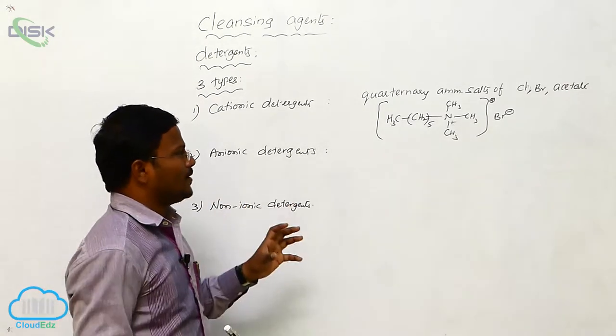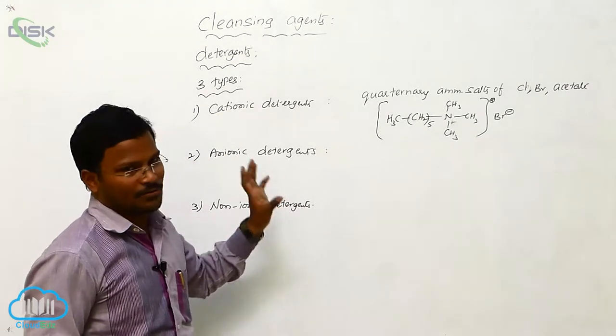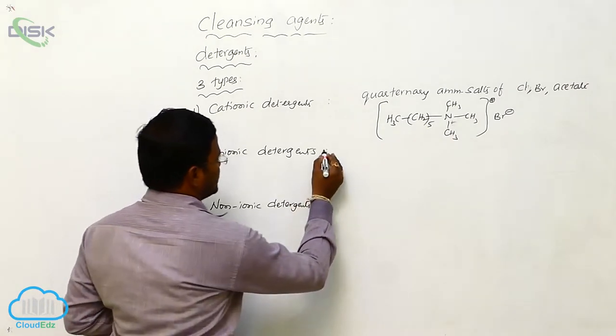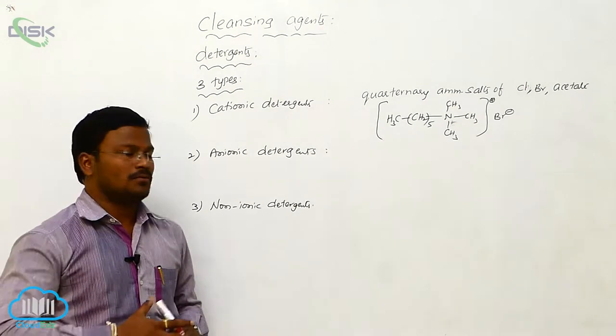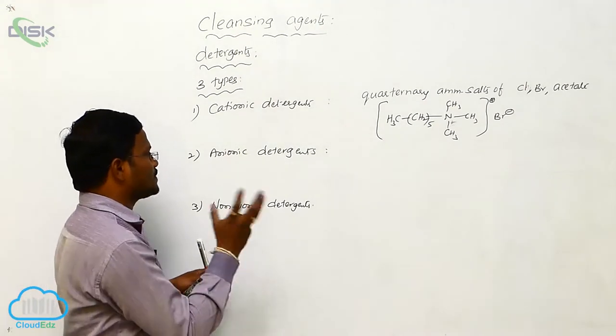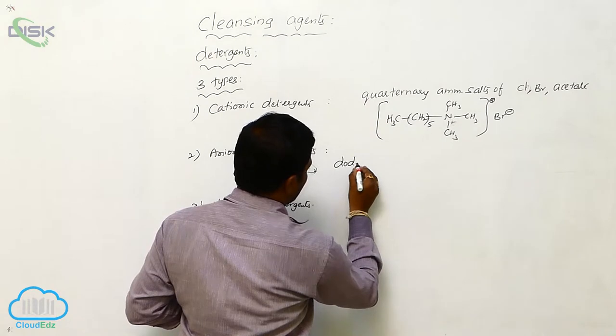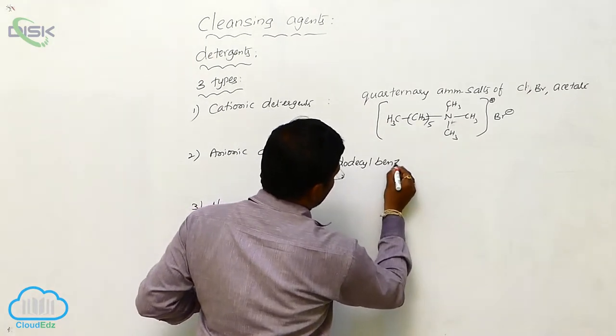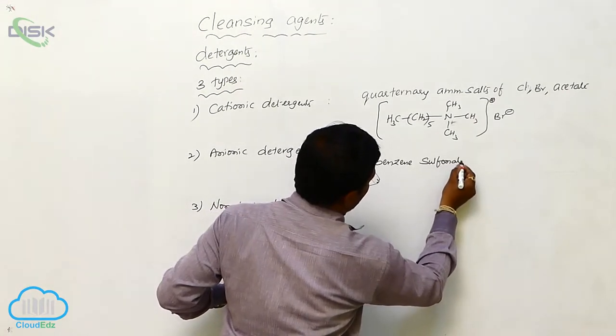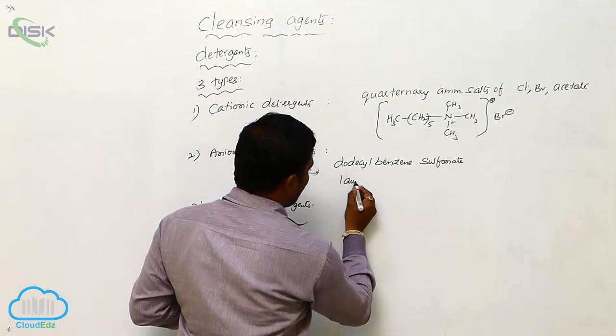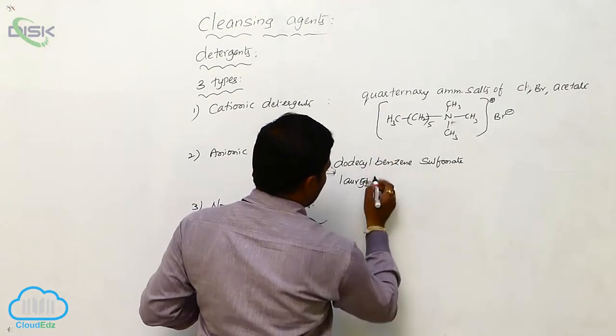And come to anionic detergent. Anionic detergents are also some names for the chemical substances which act as anionic detergents. These are dodecylbenzene sulfonate or lauryl sulfate.